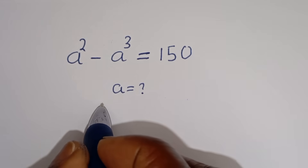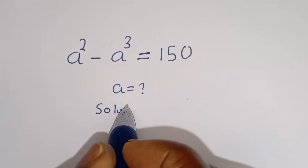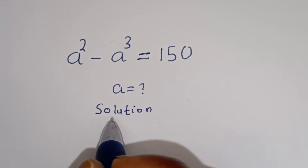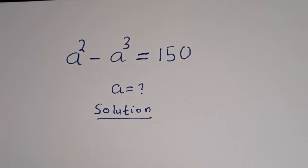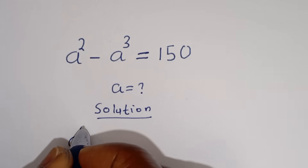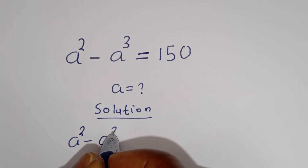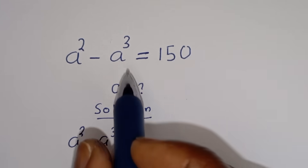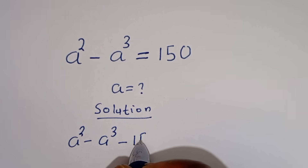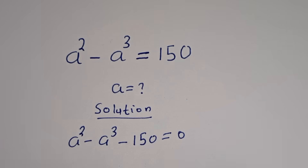Solution. We have A squared minus A to the power of 3. If we take this 150 to this side, it becomes minus 150 is equal to 0.